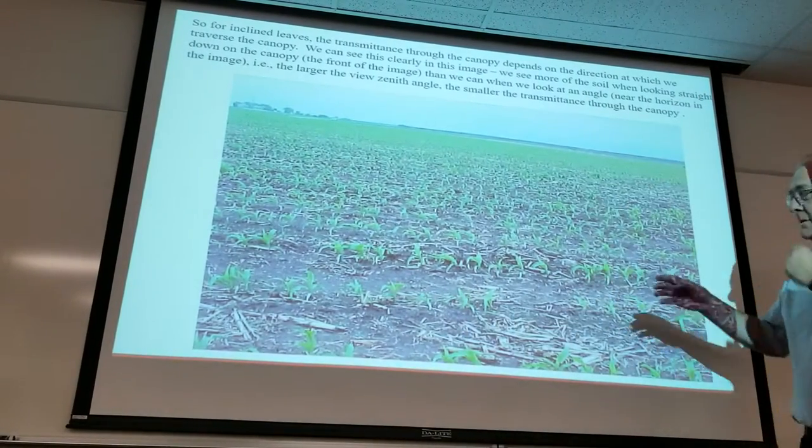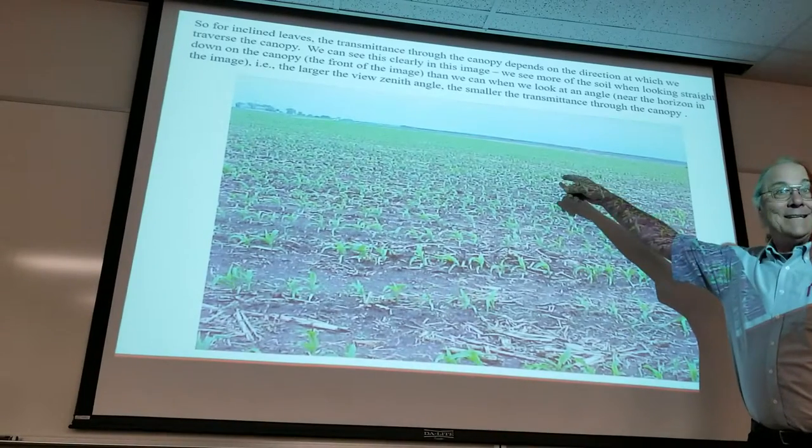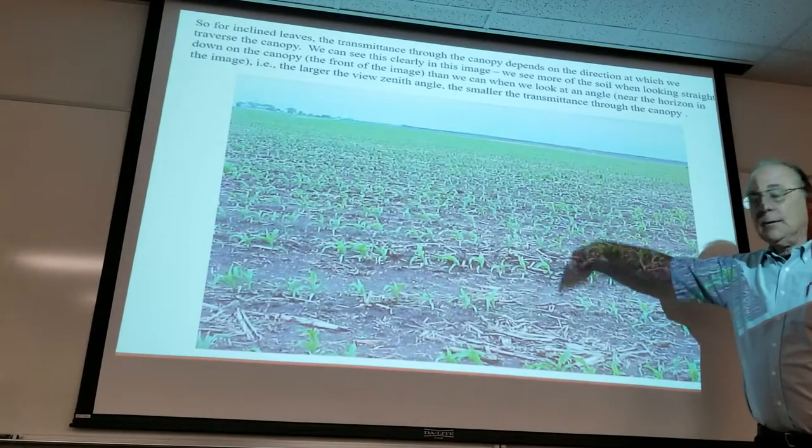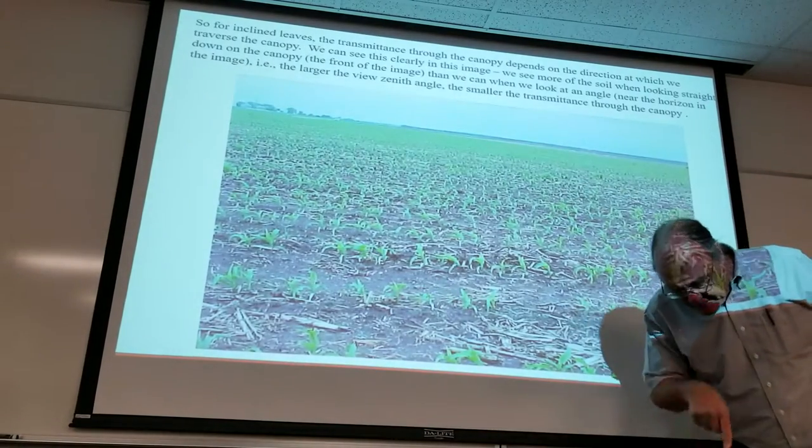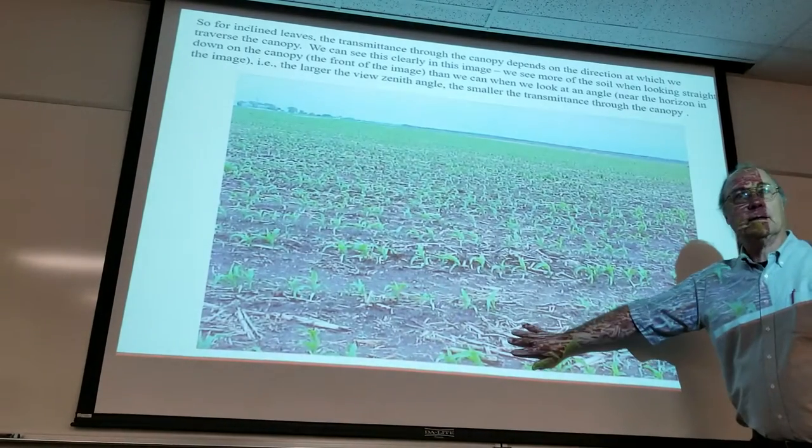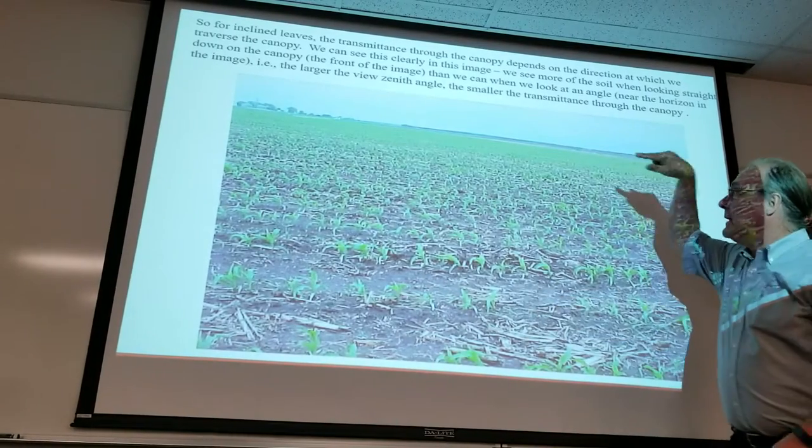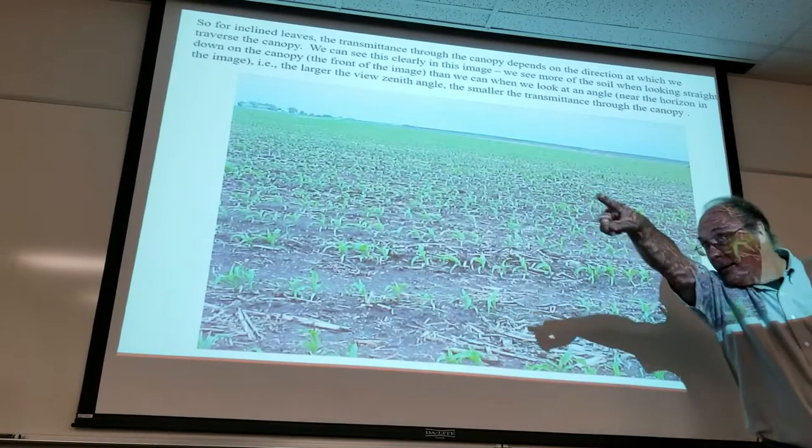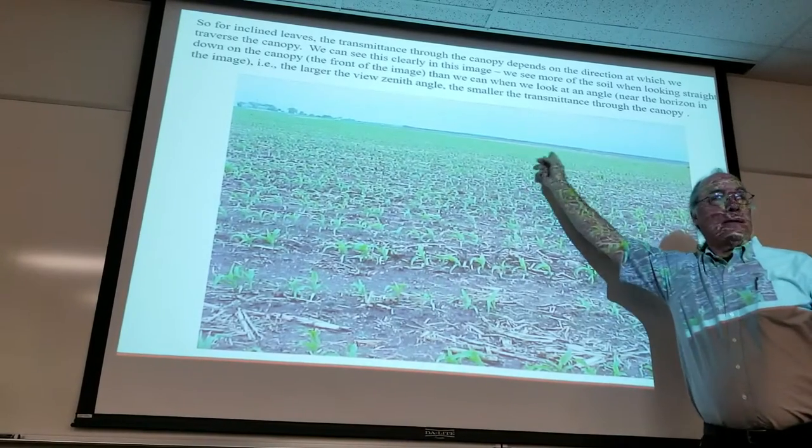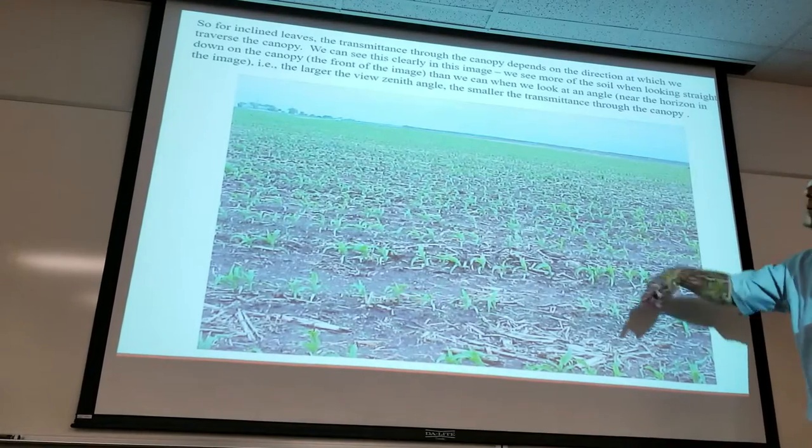This was to illustrate the difference in transmittance through the canopy depending on what angle you're looking at the canopy. If you're looking straight down on it, you see a lot of the ground compared to how much green is there, so the transmittance is high at this angle. But at this angle where you're looking like that at the canopy, you don't see anything, it's all green. So the transmittance through the canopy really depends on the angle that you're looking.